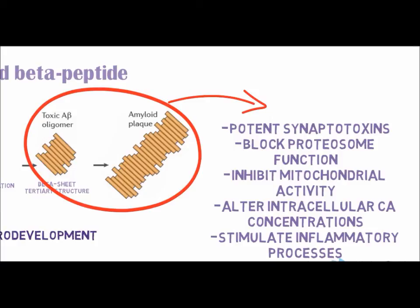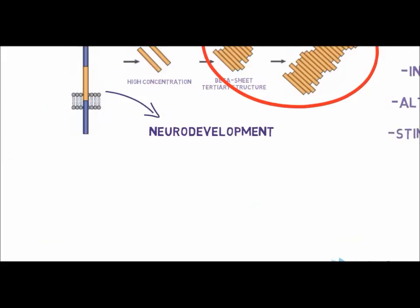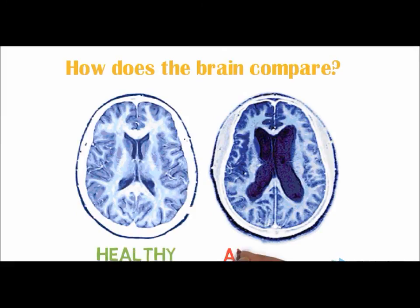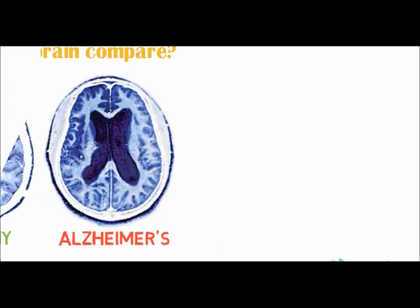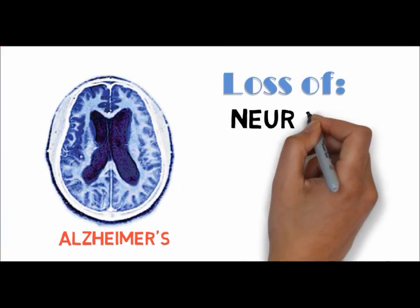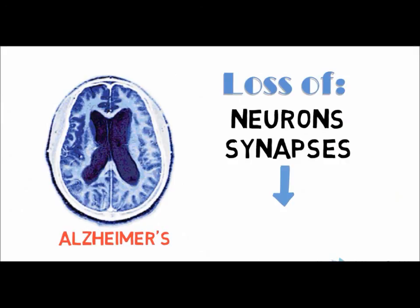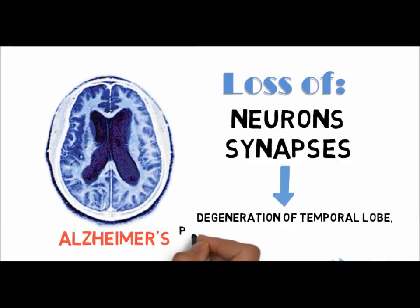This is a comparison between a healthy brain and an Alzheimer's patient's brain. Relative to a healthy individual's brain, an Alzheimer's patient's brain is characterized by the loss of neurons and synapses in the cerebral cortex as well as certain subcortical regions. This loss results in the atrophy of affected regions, such as degeneration in the temporal and parietal lobes, as well as the frontal cortex.